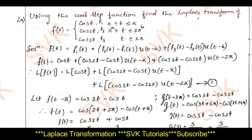Using the unit step function, find the Laplace transform of the given discontinuous function. There are three step segments: f1, f2, f3. With a = π and b = 2π, the representation is: f(t) = f1(t) + [f2(t)−f1(t)]·u(t−a) + [f3(t)−f2(t)]·u(t−b).